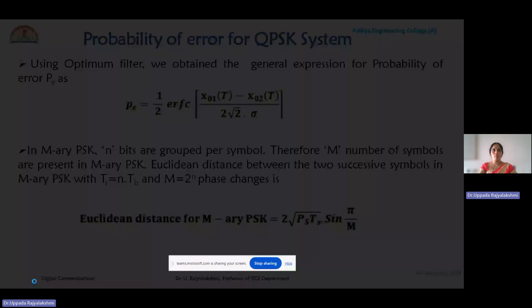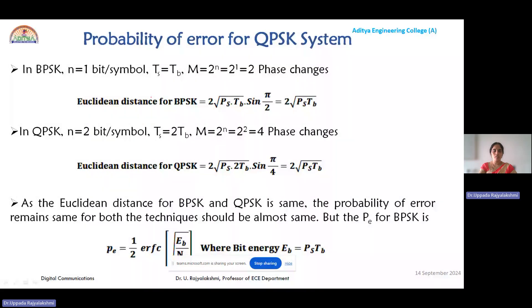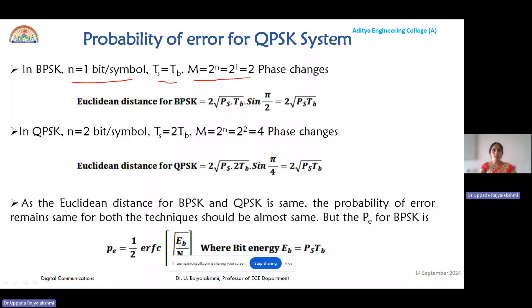In earlier modules, we calculated the Euclidean distance for BPSK and QPSK. In BPSK, since one bit is grouped per symbol, Ts = Tb, and the number of phase changes is 2¹ = 2. Therefore the Euclidean distance for BPSK is 2√(Ps · Ts) · sin(π/m), where m = 2. Since sin(π/2) = 1, the Euclidean distance for BPSK simplifies to 2√(Ps · Tb).